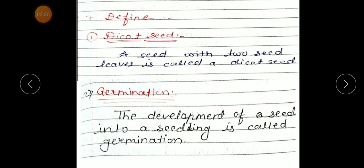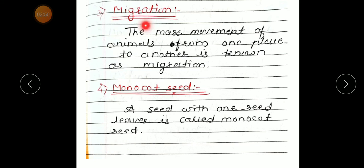Number 2: Germination. Definition of germination: The development of a seed into a seedling is called germination. Number 3: Migration. The mass movement of animals from one place to another is known as migration. Number 4: Monocot seeds — a seed with one seed leaf is called a monocot seed.